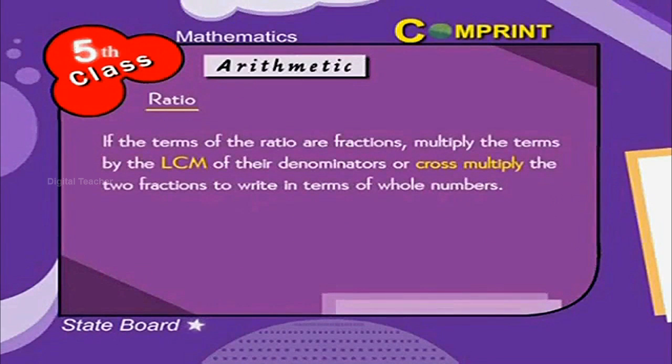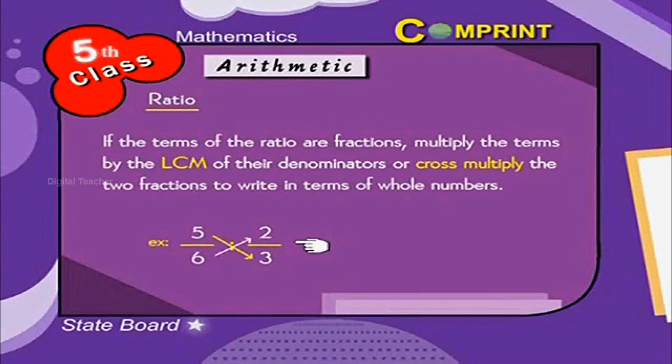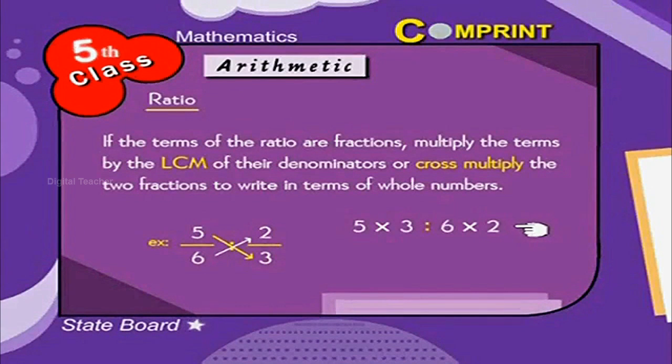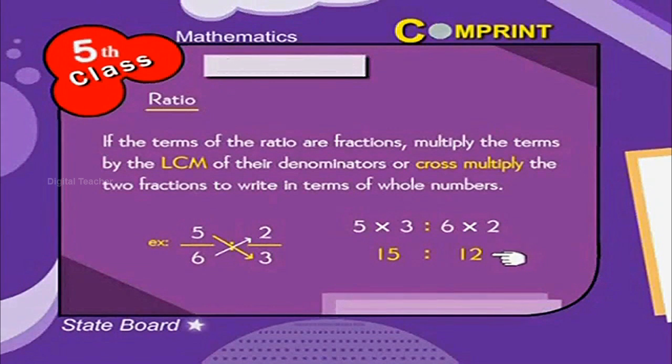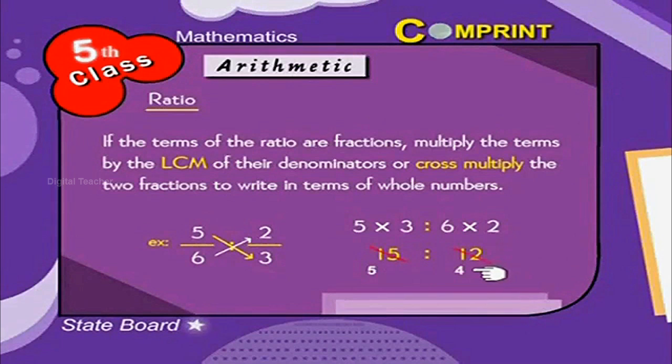If the terms of the ratio are fractions, multiply the terms by the LCM of their denominators or cross multiply the two fractions to write in terms of whole numbers. For example, 5 by 6 is to 2 by 3. If we cross multiply this can be written as 5 into 3 is to 6 into 2. So we get 5 3s are 15 is to 6 2s are 12. If we cancel with 3, 3 5s are 15, 3 4s are 12 is equal to 5 is to 4.